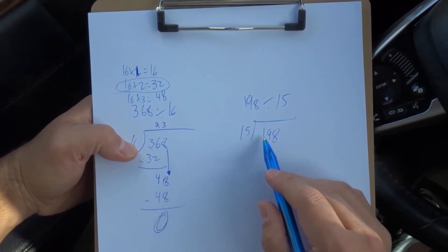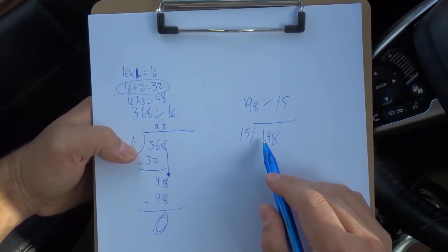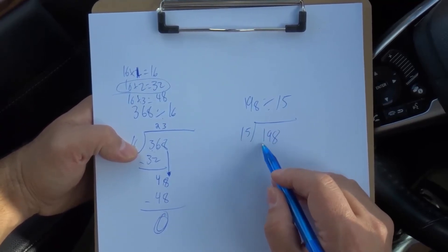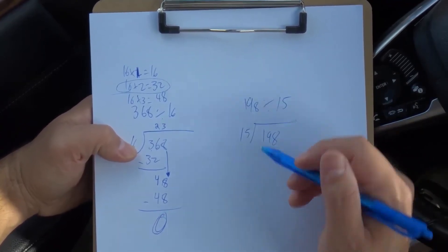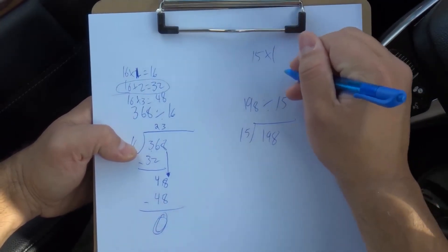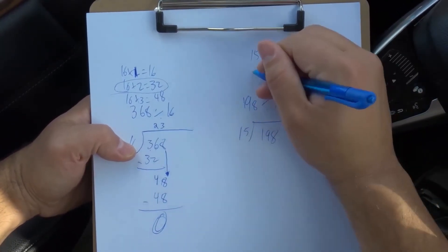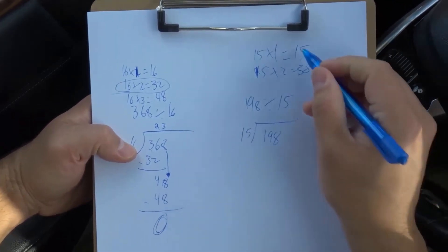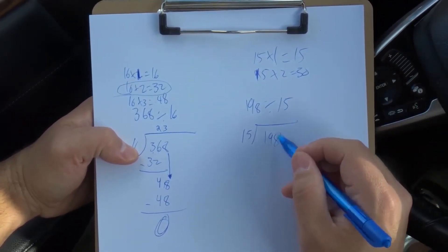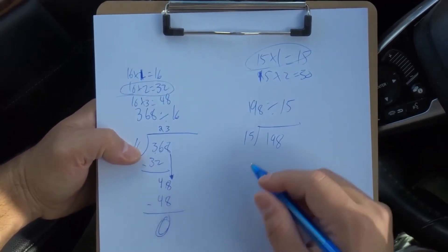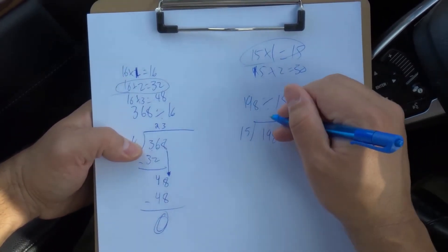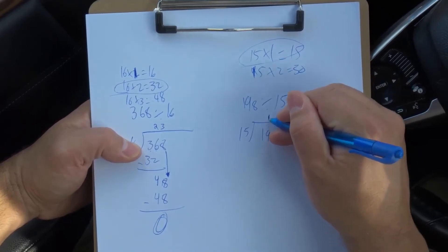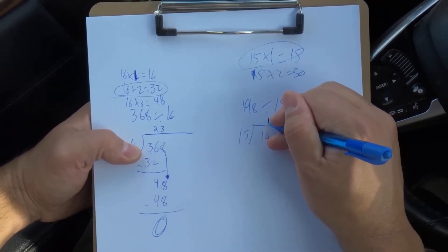Can 15 go into 1? No, we can't divide 1 by 15. It doesn't make sense. What about the first two numbers, the 19? Can we divide 19 by 15? Well, 15 times 1 is 15, and 15 times 2 is 30. 15 goes into 19. 30 is too big. So 15 times 1 is what we're looking at. We're going to put the 1 up here above the 9, above the rightmost number that we're working with.